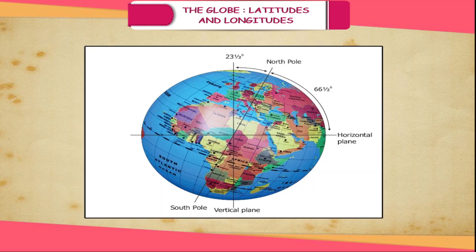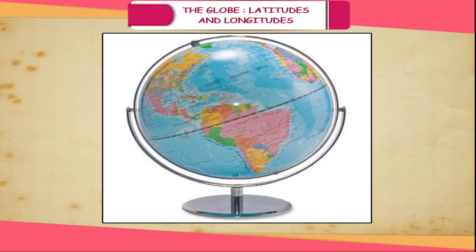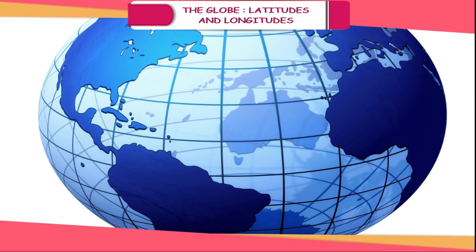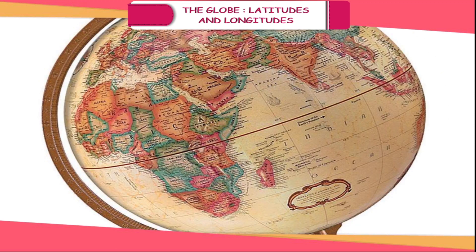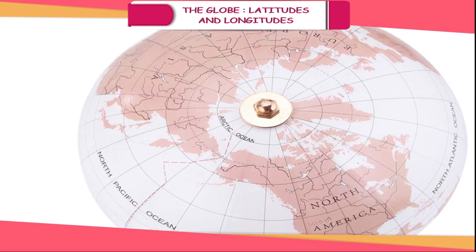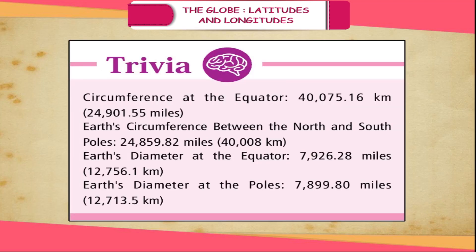We use a globe to represent Earth. Thus, a globe is a model of Earth on a small scale. A globe is mounted on an axis and you can spin it in the way Earth actually rotates. The axis of the Earth is tilted, which is how the globe is also shown. It is not easy to carry the globe everywhere, although nowadays handy folding globes are available. With the help of globes, we can easily understand distances, directions, and the exact shape of continents and oceans.